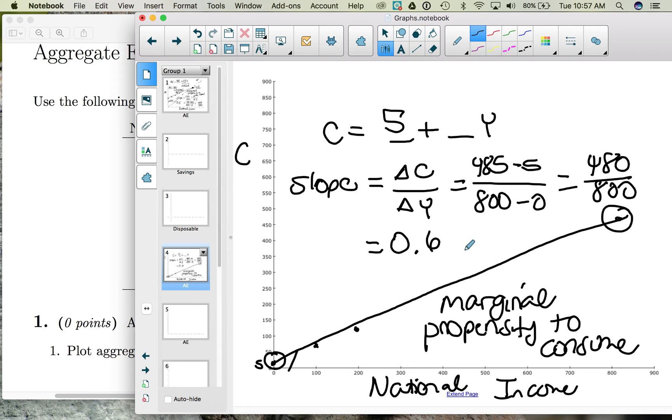So what this tells us is for every additional dollar of income, households will spend 60 cents of it. So our slope here is 0.6.